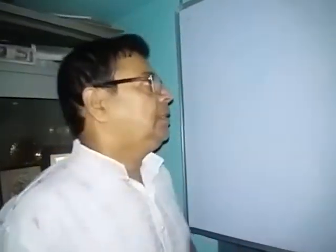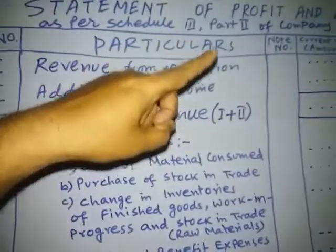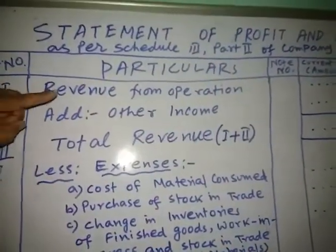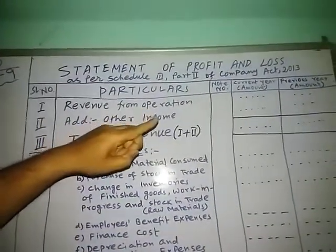Welcome to the next discussion. Previously, in eight episodes, I have discussed the statement of balance sheet as per Schedule 3, Part 1 of the Indian Companies Act 2013. Now, we will cover the statement of profit and loss as per Schedule 3, Part 2 of the Companies Act 2013.